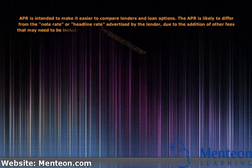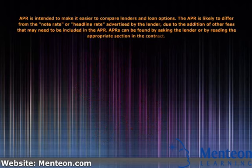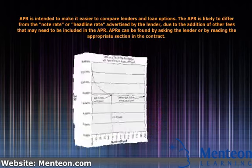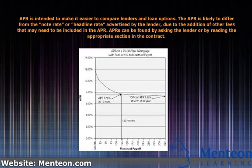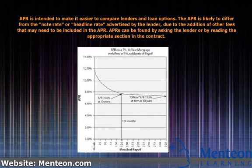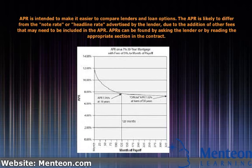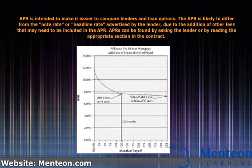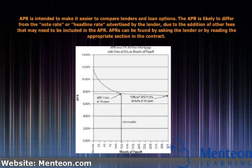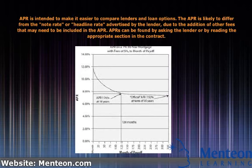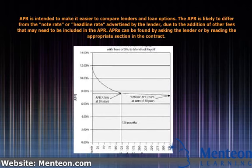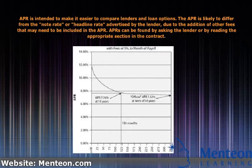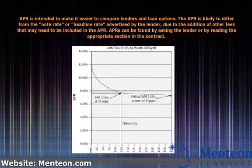APR is intended to make it easier to compare lenders and loan options. The APR is likely to differ from the note rate, or headline rate advertised by the lender, due to the addition of other fees. APRs can be found by asking the lender or by reading the appropriate section in the contract.